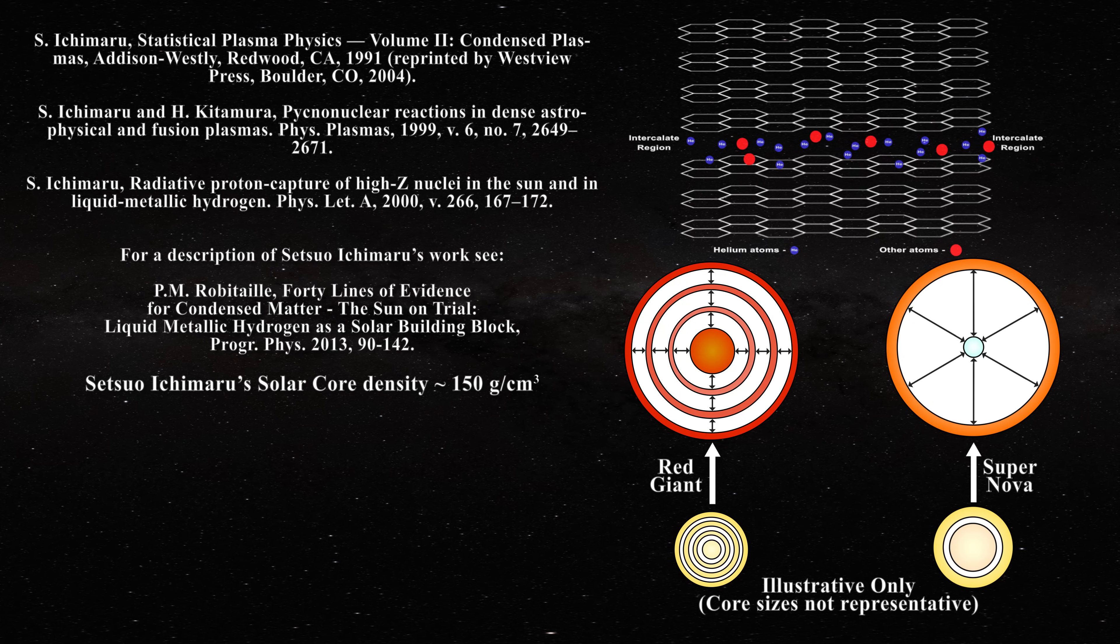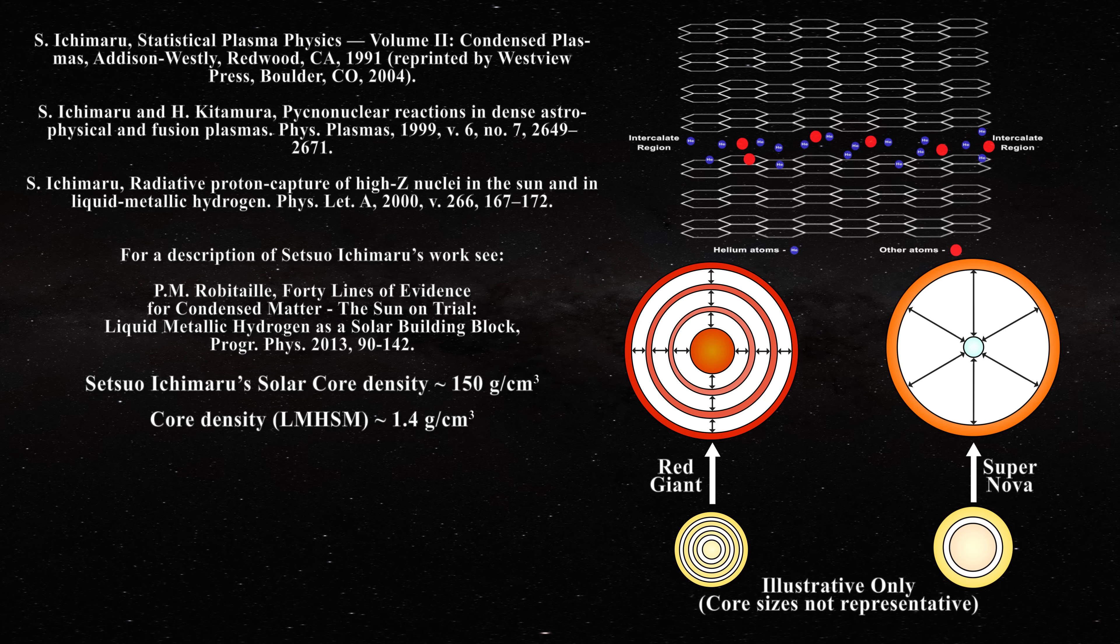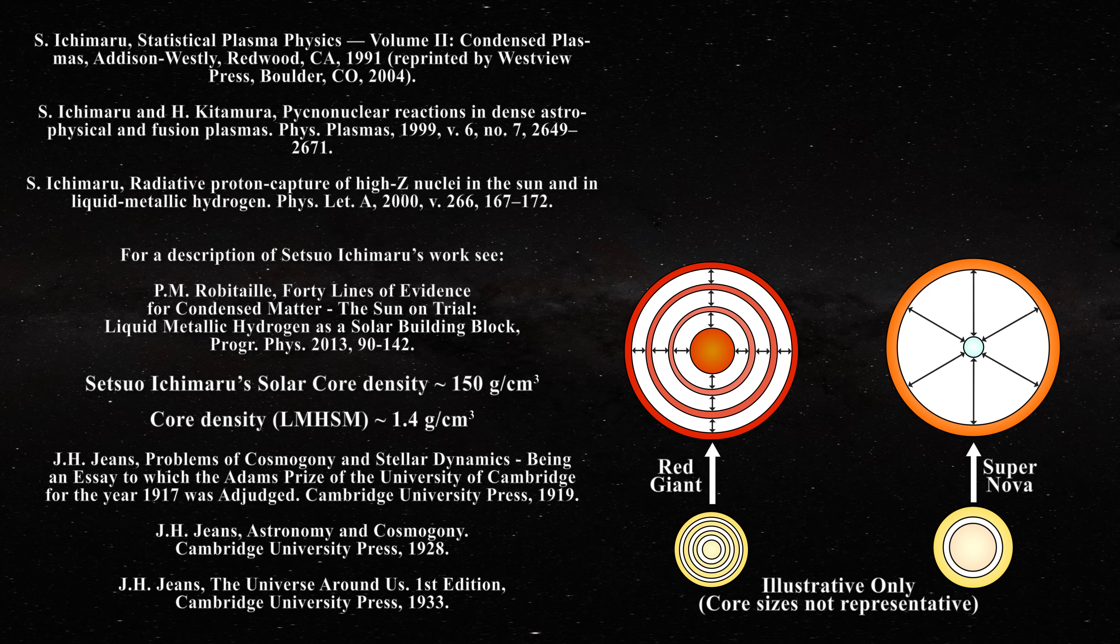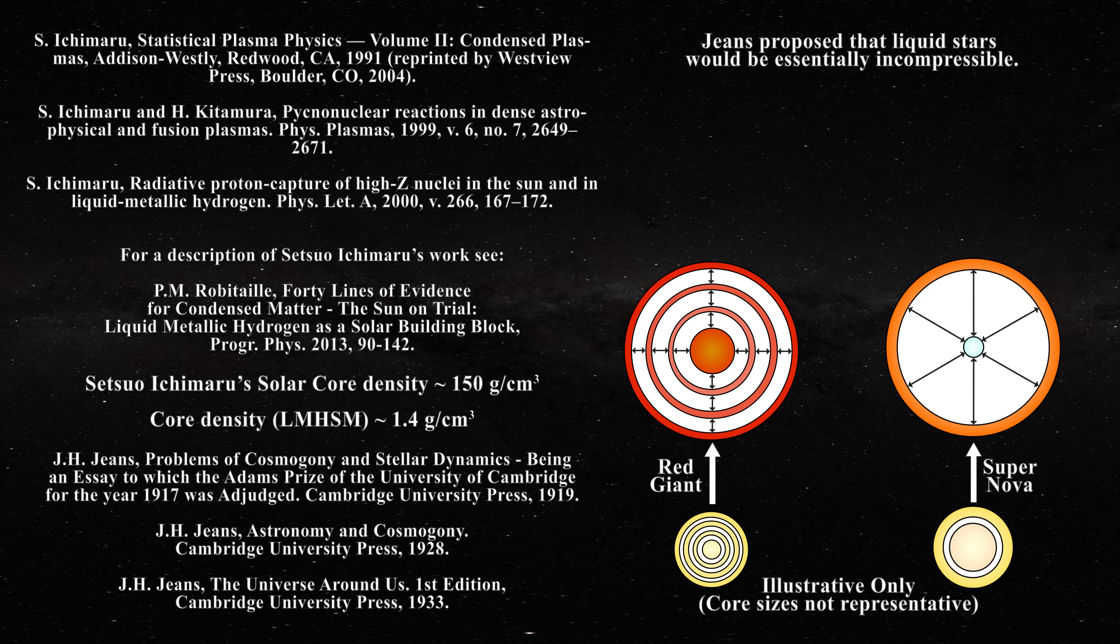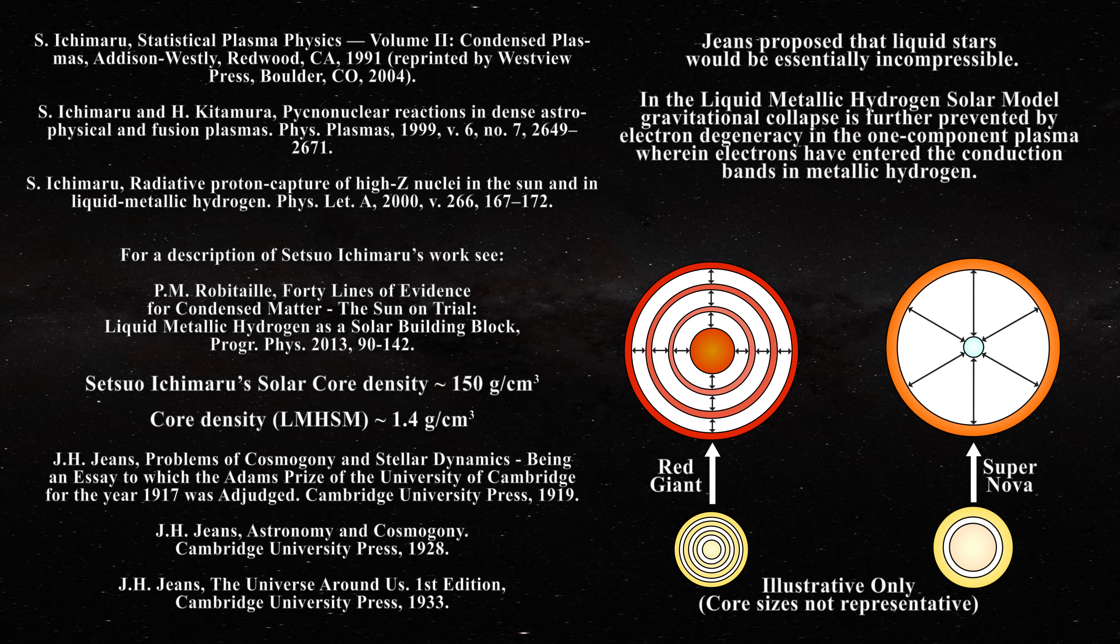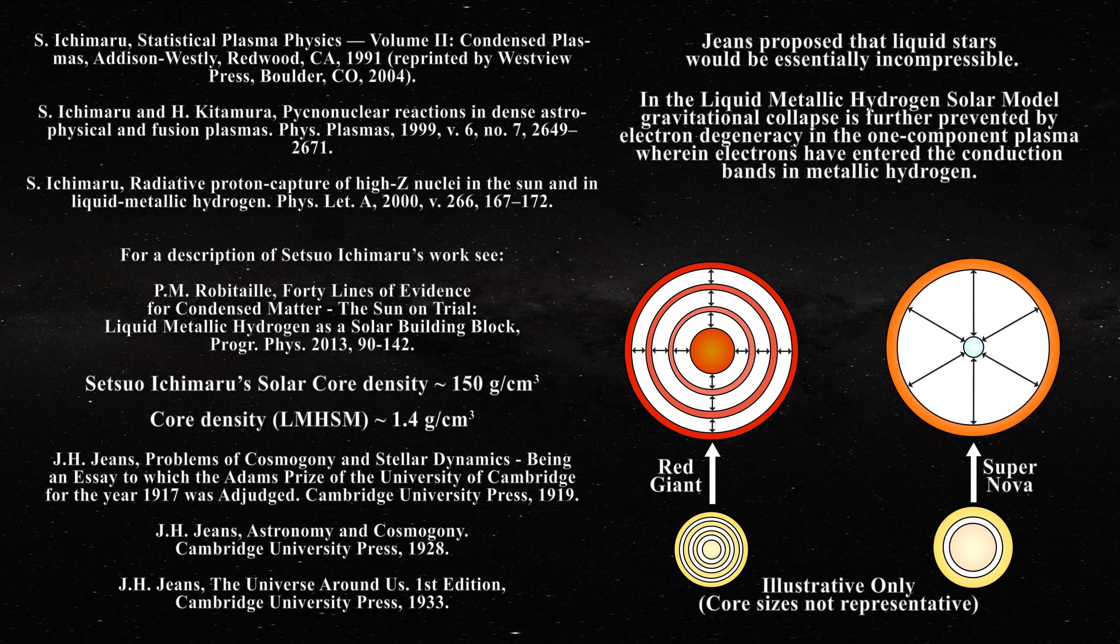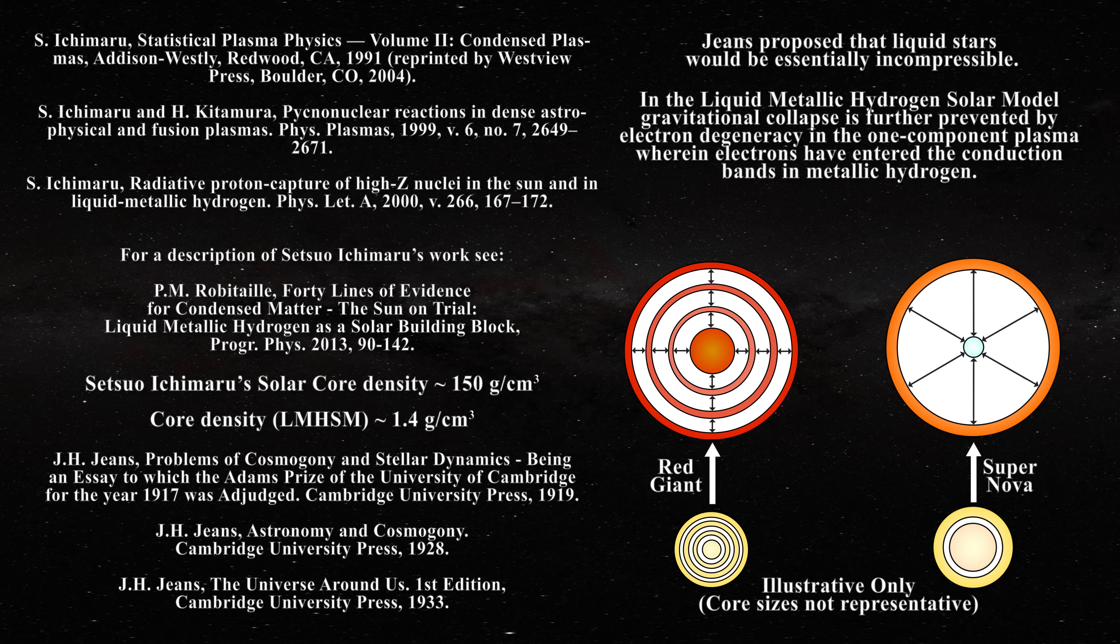In the latter, the density of the star is relatively uniform throughout, as was initially proposed by James Jeans for liquid stars at the turn of the 20th century. James had proposed that liquid stars would be essentially incompressible by definition. In the metallic hydrogen solar model, this concept has been taken a little further. The star is prevented from undergoing gravitational collapse by the presence of electron degeneracy in the one-component plasma which constitutes the metallic hydrogen.